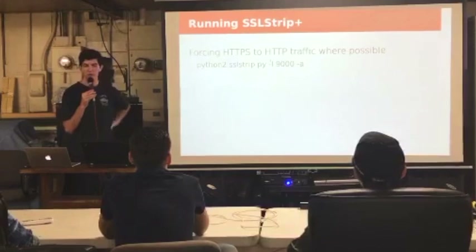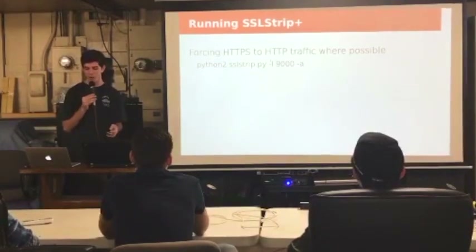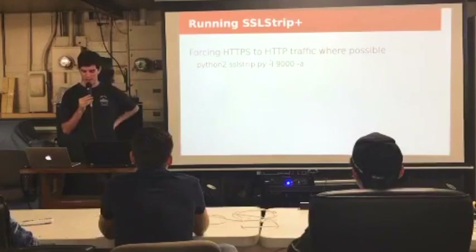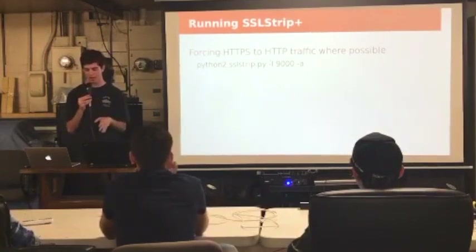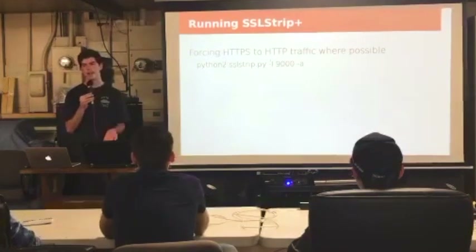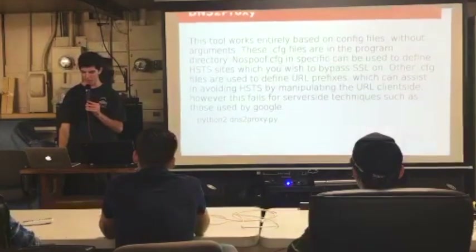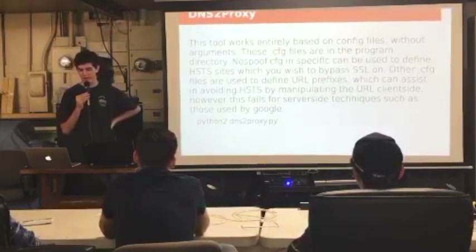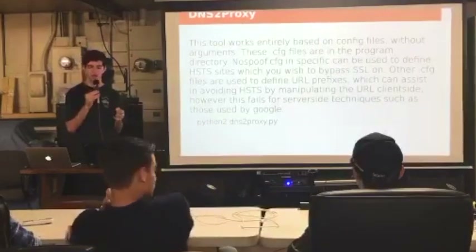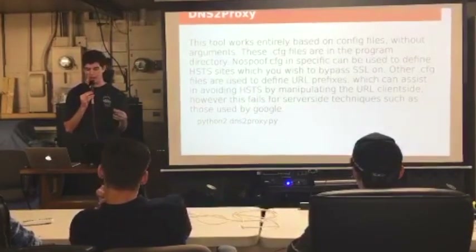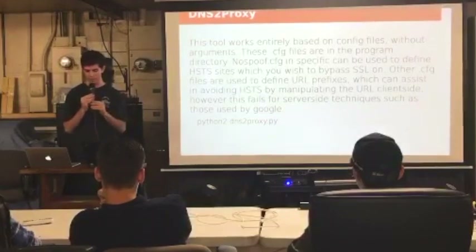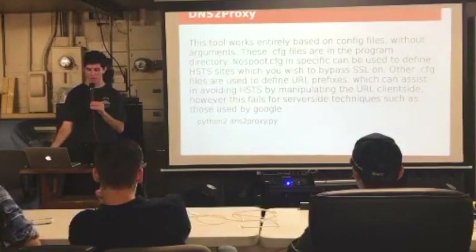We can also use different tools to try and automatically downgrade encrypted connections. One of these is SSLstrip, written by Moxie Marlinspike, who also developed Signal — he has done a lot for encryption. We can run SSLstrip with really just one parameter, specifying what port we've moved the normally encrypted traffic to, such as port 9000 or 8080. We also want to use DNS2proxy, which we can use to redirect certain websites to certain addresses, and within the scope of a man-in-the-middle attack it will just impersonate DNS servers automatically. We can just run that Python script without arguments.